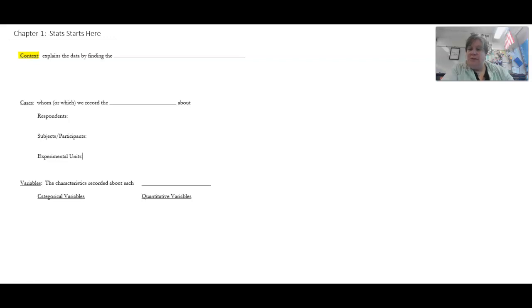Context is explained by finding the who, the what, the when, the where, the why, and the how. A lot of times we're going to call it the W's. I know how doesn't start with a W, but it has a W in it, so it works.